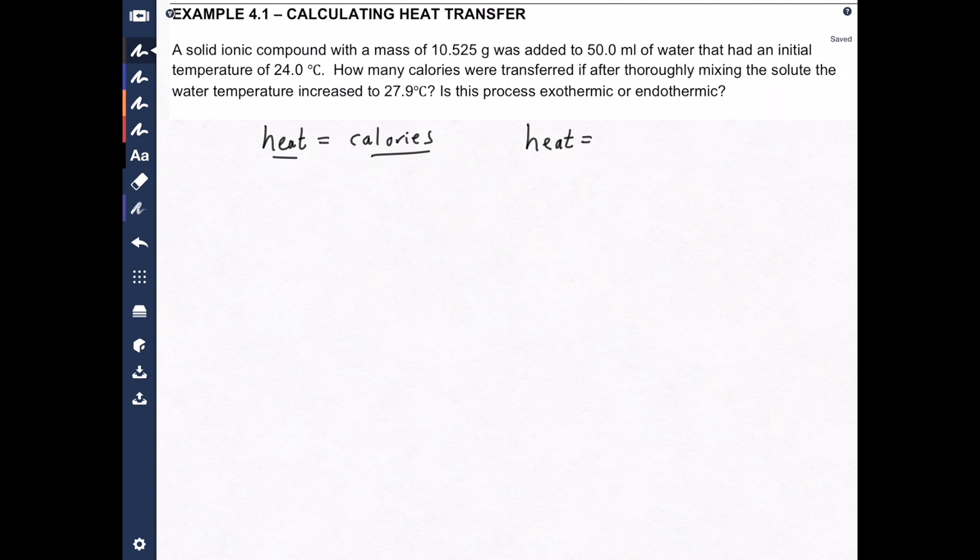Heat equals the mass of solution multiplied by the change in temperature. It's usually called delta T or change in temperature, and that's going to be multiplied by the heat capacity of water, which is 1.00 calories per gram degree Celsius. So that is the expression that we need to know that's in your book. Heat is often referred to as Q.